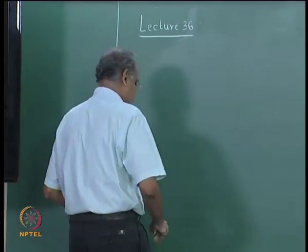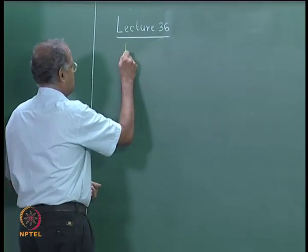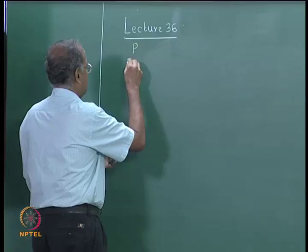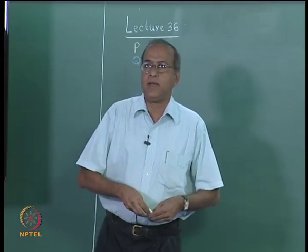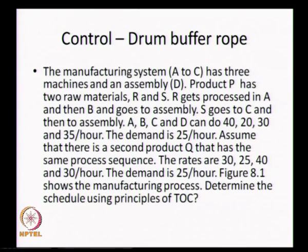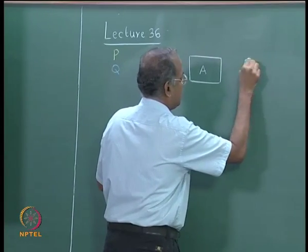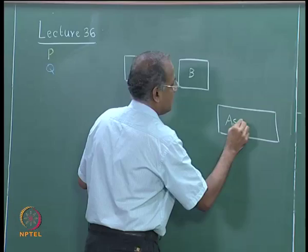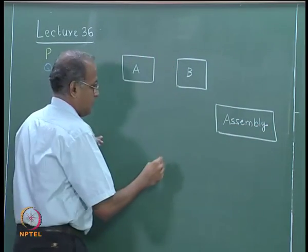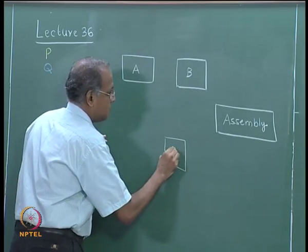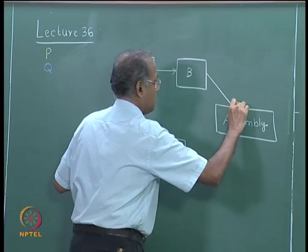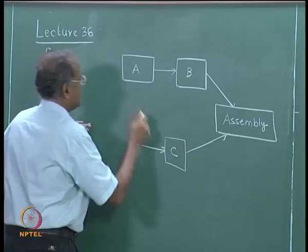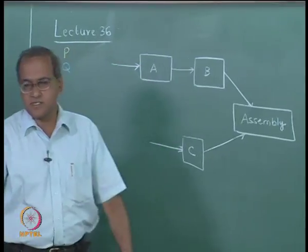The system makes two products, P and Q. Product P has two raw materials, R and S. R gets processed in A and B and goes to assembly. We have machine A, machine B, and then the assembly. We also have a third machine C. This is the manufacturing system.